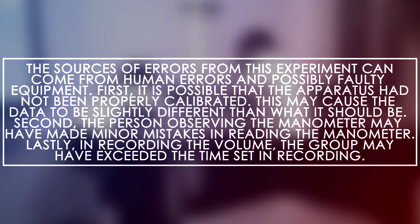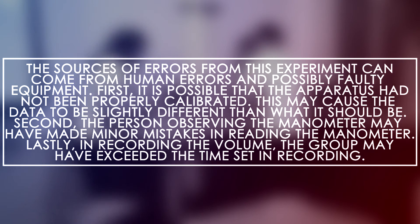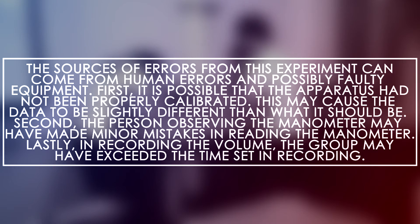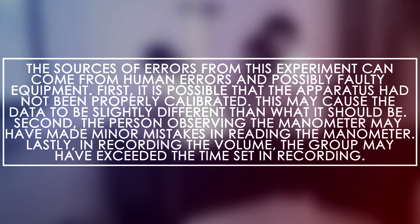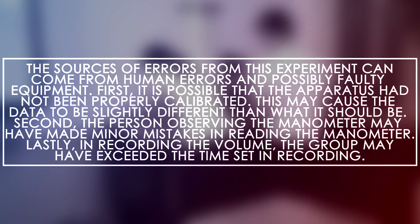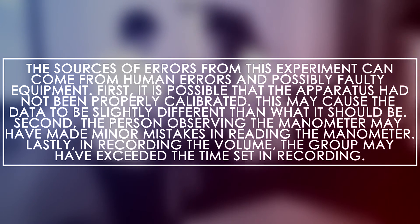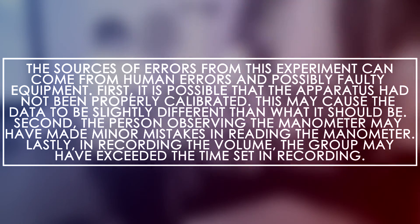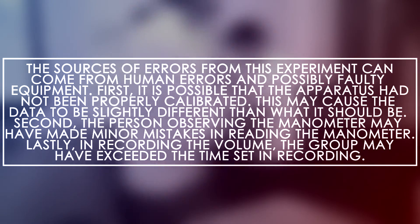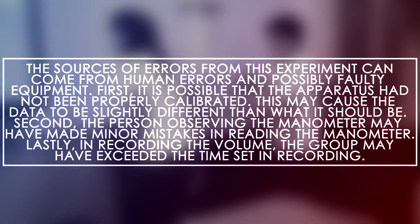Sources of errors. The sources of error for this experiment can come from human errors and possibly faulty equipment. First, it is possible that the apparatus had not been properly calibrated. This may cause the data to be slightly different than what it should be. Second, the person observing the manometer may have made minor mistakes in reading the manometer. Lastly, in recording the volume, the group may have exceeded the time set in recording.